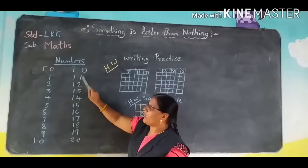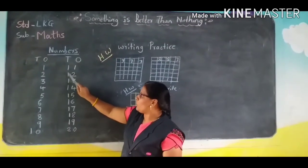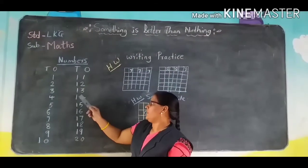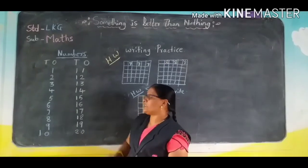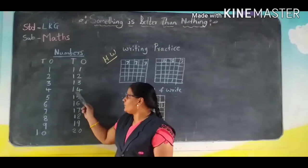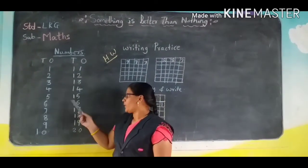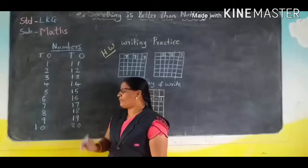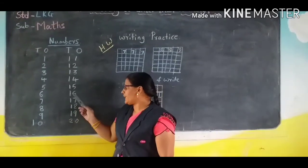One, one, eleven. One, two, twelve. One, three, thirteen. One, four, fourteen. One, five, fifteen. One, six, sixteen.